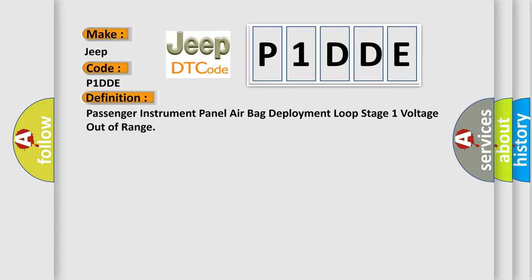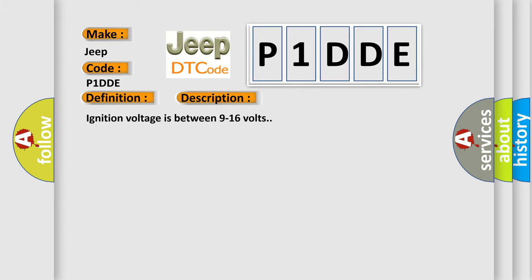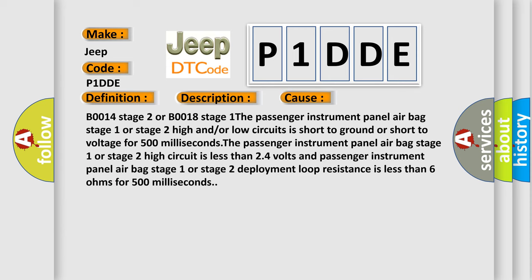And now this is a short description of this DTC code. Ignition voltage is between 9 to 16 volts. This diagnostic error occurs most often in these cases: B0014 Stage 2 or B0018 Stage 1. The passenger instrument panel airbag stage 1 or stage 2 high and/or low circuits is short to ground or short to voltage for 500 milliseconds.